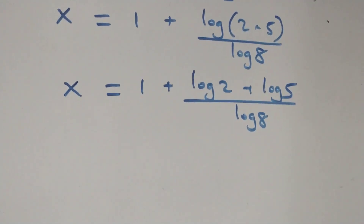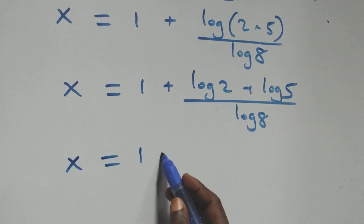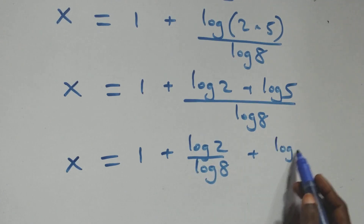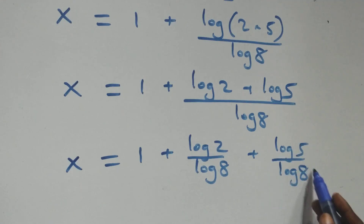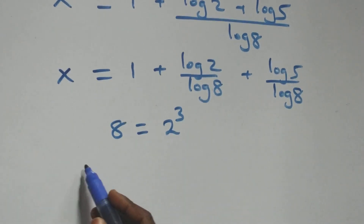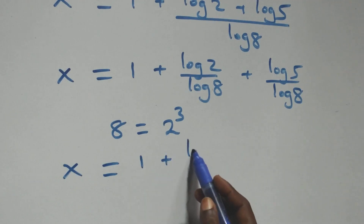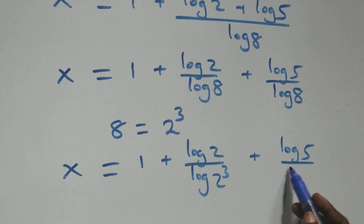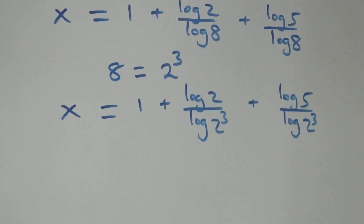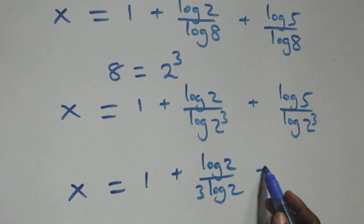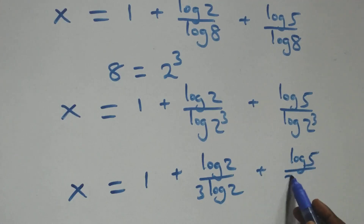We separate into two fractions: x = 1 + log(2)/log(8) + log(5)/log(8). Since 8 = 2³, log(8) = 3·log(2). This gives x = 1 + log(2)/(3·log(2)) + log(5)/(3·log(2)).